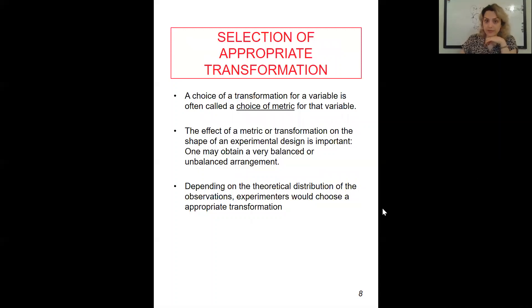We want to talk about selection of appropriate transformation. A choice of a transformation for a variable is often called the choice of metric for that variable. The effect of a metric or transformation on the shape of an experimental design is important.